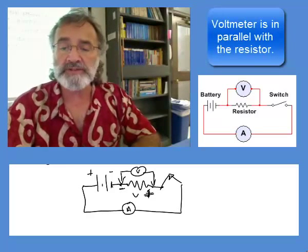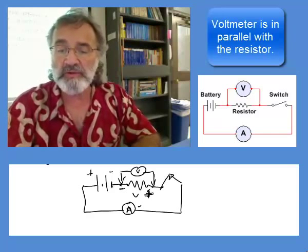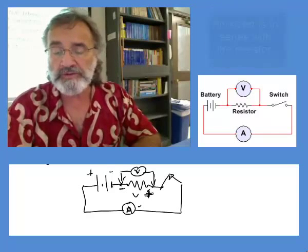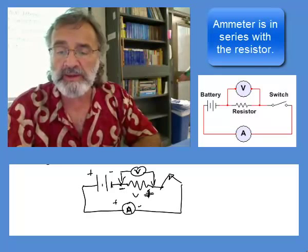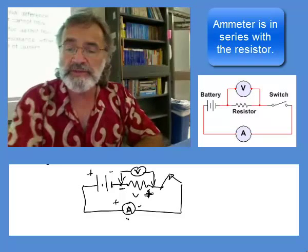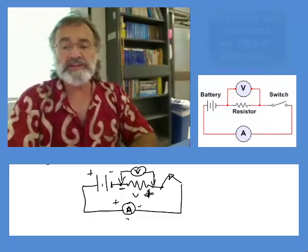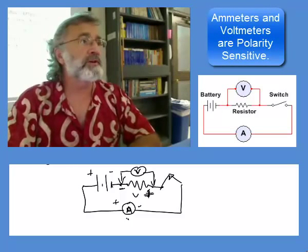The current has to go through the battery, or excuse me, the amp meter. And they put an A in here for amp, to put a V in the circle here for voltage. And that would be negative positive, these are polarity sensitive.